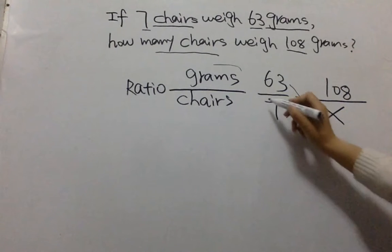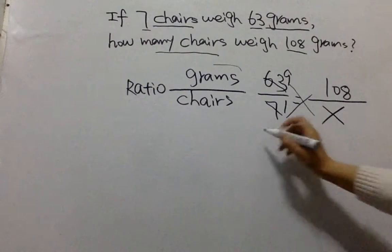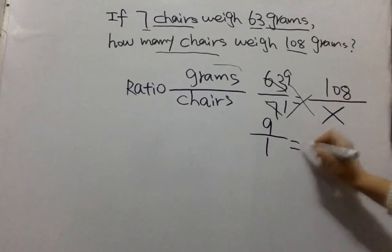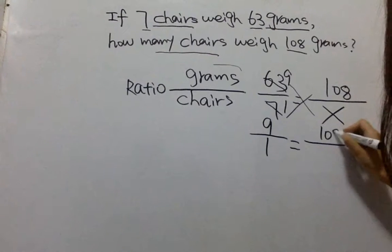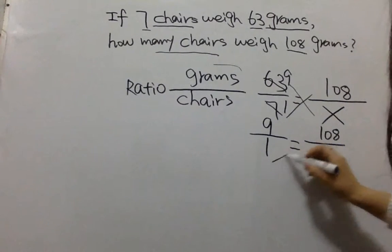So 63 divided by 7 is 9. So basically it's 9 over 1 equal to 108 over X.